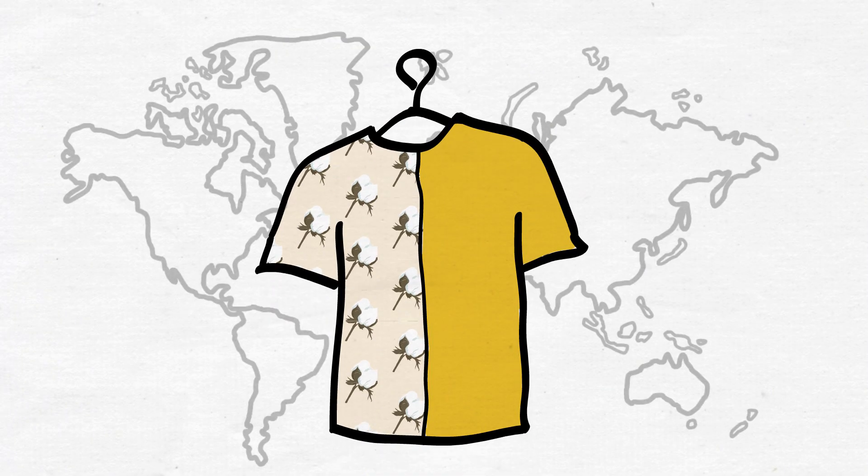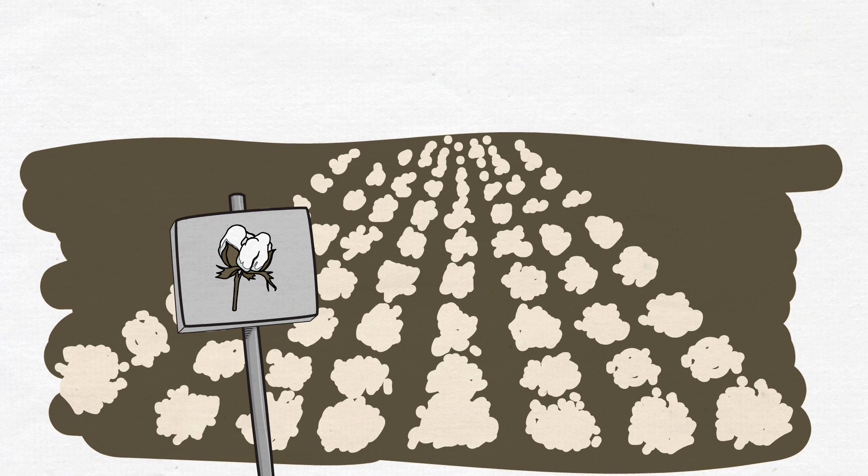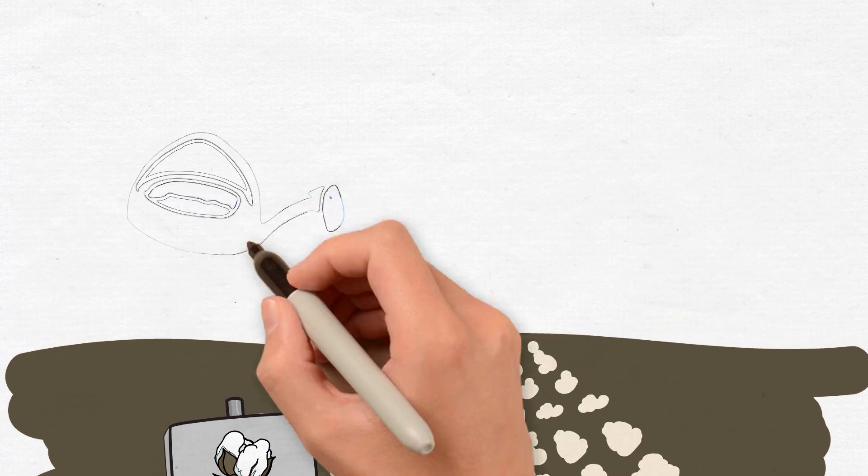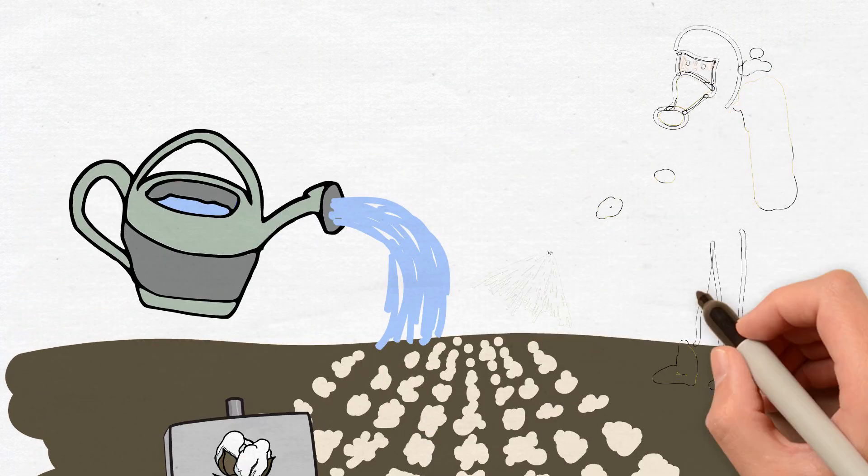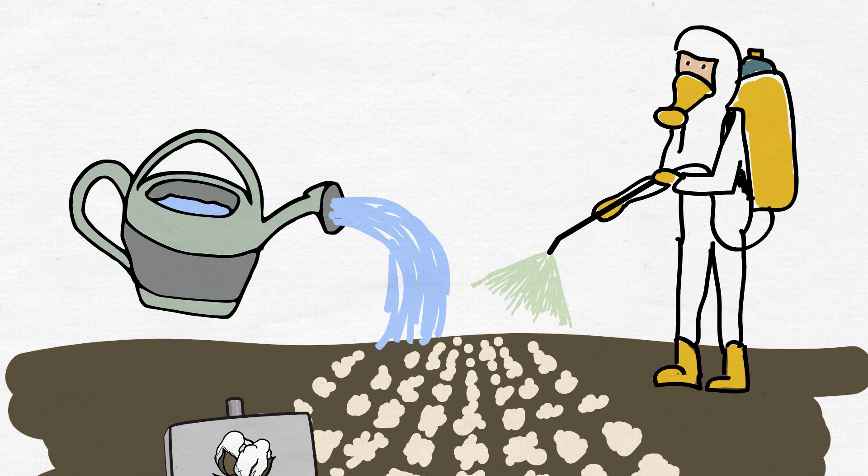Half of all clothing is made of cotton and its cultivation consumes a lot of water. Growing it also requires more pesticides than any other crop.